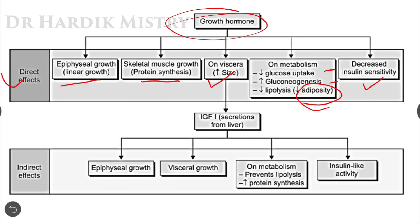The indirect effects of growth hormone are via insulin-like growth factor 1 (IGF-1), which is secreted from the liver. It causes epiphyseal growth and visceral growth. On metabolism, it prevents lipolysis and increases protein synthesis, and it has insulin-like activity. These are the direct and indirect effects of growth hormone on different tissues of the body.